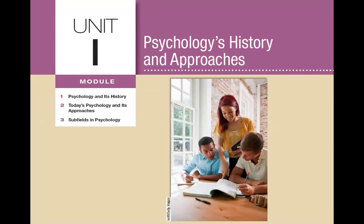In module one, we're going to be talking about psychology and its history. In unit one — which is unit one of 14 — the whole overall unit is called Psychology's History and Approaches. Within unit one, it's about history, today's approaches, and subfields in psychology. This is probably one of the shortest units within the whole entire textbook.